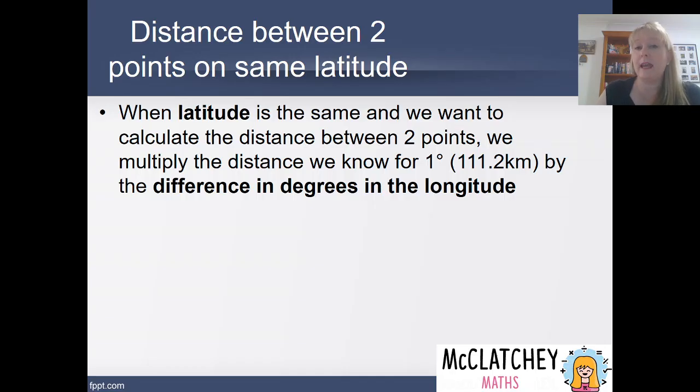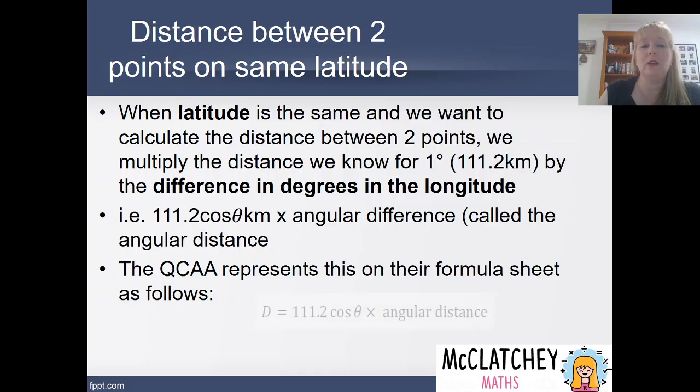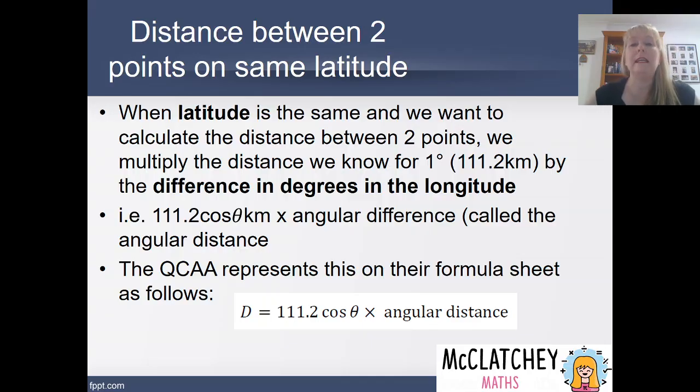Well, when we've got a different latitude, we have a slightly different rule, and it's up to you to remember the difference. So when the latitude is the same, and we want to calculate the distance, we need to multiply that distance by the difference in the degrees and the longitude. And I'll show you what that looks like. We've got a new formula here. It looks like this. d is equal to 111.2 cos theta times the angular distance.